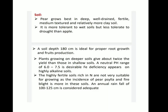Regarding soil, pear grows best in deep, well-drained, fertile, medium texture and relatively more clay soil. It is more tolerant to wet soils but less tolerant to rot than apple. A soil depth of 180 cm is ideal for proper root growth and fruit production. Plants growing on deeper soils give about twice the yield. A neutral pH range of 6 to 7.5 is desirable. Iron deficiency appears on highly alkaline soils. Highly fertile soils rich in nitrogen are not very suitable for growing pear, as the incidence of pear psylla and fire blight is more in these soils. An annual rainfall of 100 to 125 cm is considered adequate.